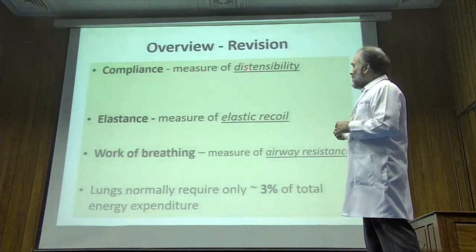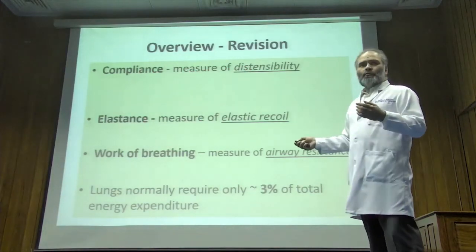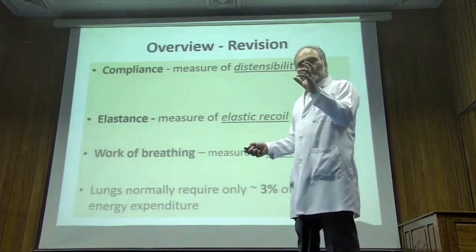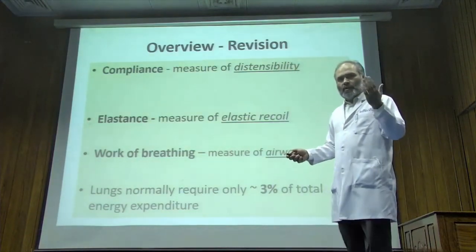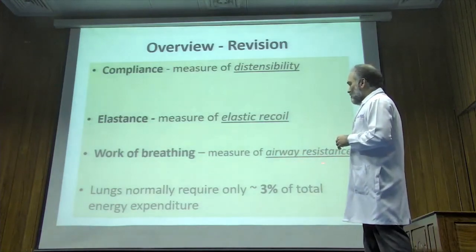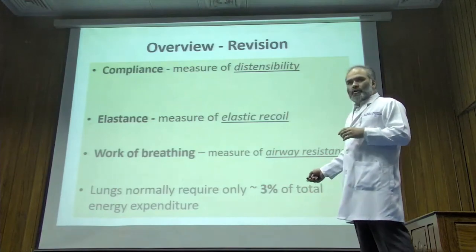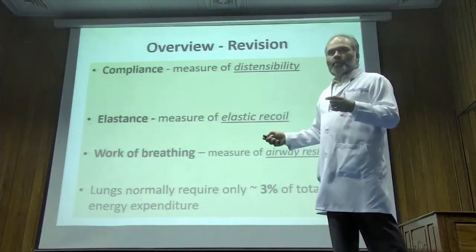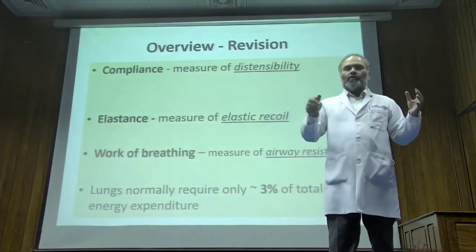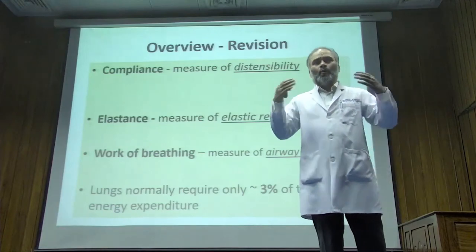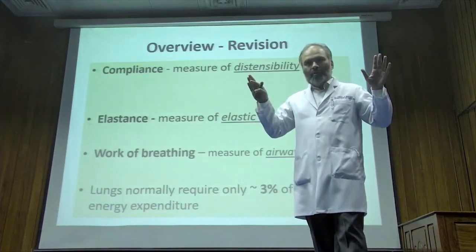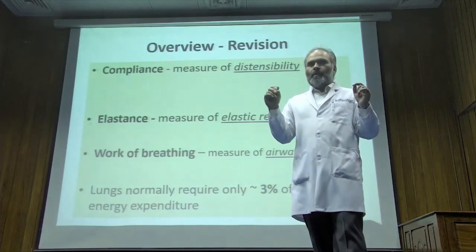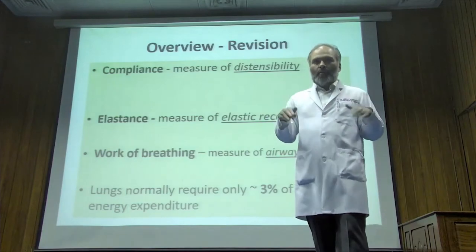Compliance is a measure of distensibility; elastance is a measure of recoil. I dedicated a significant chunk of the last lecture to work of breathing. Work of breathing is a measure of air resistance. Normally the lung is a well-oiled machine which only expends less than three percent of total energy — compliance, elastance, and work of breathing are balanced such that not a huge amount of effort is required to expand the lung, and expiration happens passively. This is a normal lung: nicely distendable, good compliance, recoil kept in check.